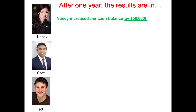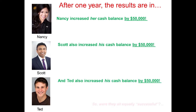Nancy increased her cash balance by $50,000. Scott also increased his cash balance by $50,000. And Ted also increased his cash balance by $50,000. So they all increased their respective cash balances by the same amount.